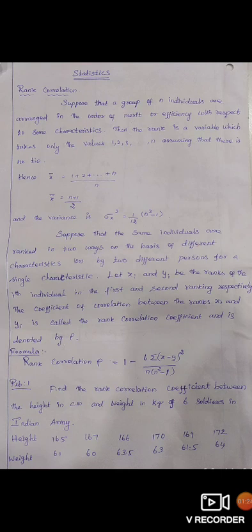Next problem: Find the rank correlation coefficient between the height in centimeters and weight in kilograms of 6 soldiers in Indian army. The height values are 165, 167, 166, 170, 169, 172. The weight values are 61, 60, 63.5, 63, 61.5, and 64.